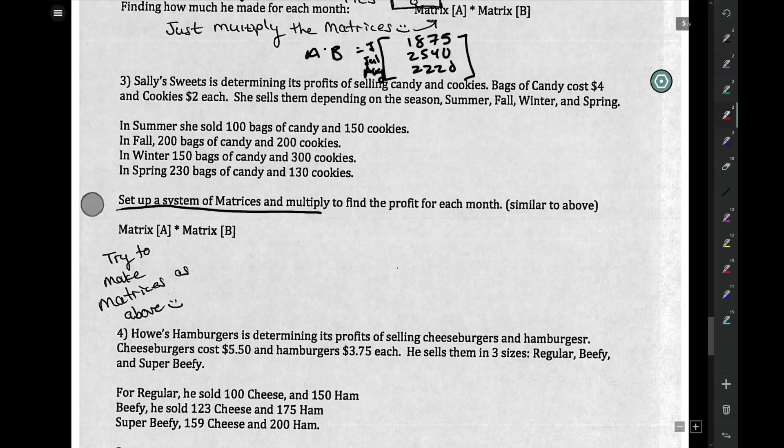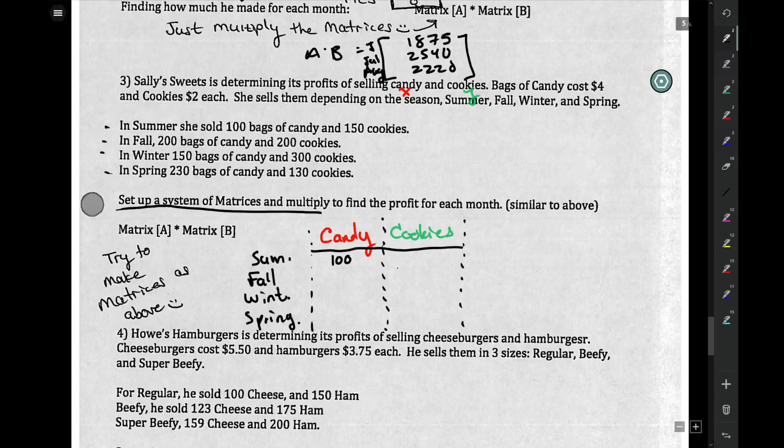Now, when do you sell them? Summer, fall, winter, spring. So you have, as your rows, summer, fall, winter, spring. And from there, you just kind of make a little matrix. It's almost as though you own a business and you want to organize your sales. So for candy, you had 150, 200, you had 150, 300, and you had 230 and 130.